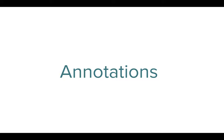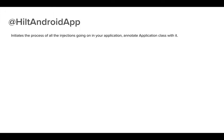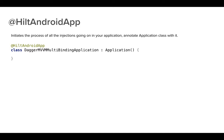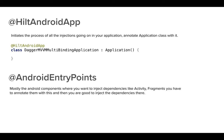Now let's jump into annotations. The first one is @HiltAndroidApp. You have your Application class and it has to be annotated with @HiltAndroidApp. This annotation signifies that you are going to use Hilt as your dependency injection framework. As soon as you annotate your Application class with this, Hilt will start building the dependency graph for you.